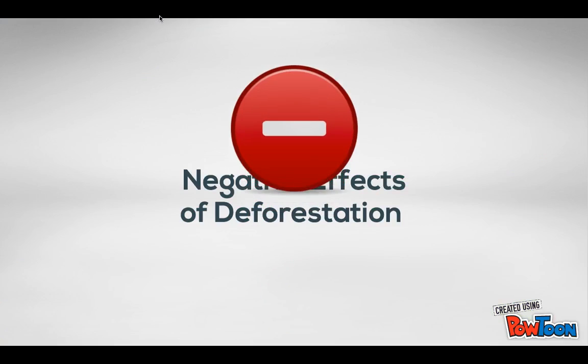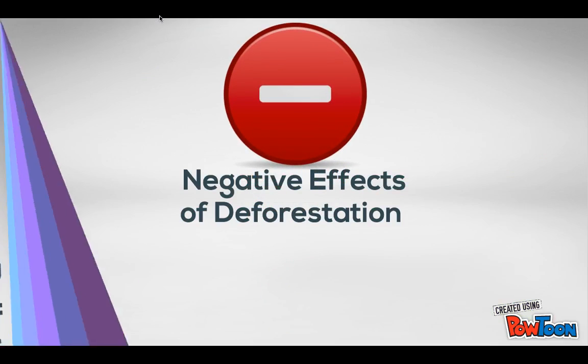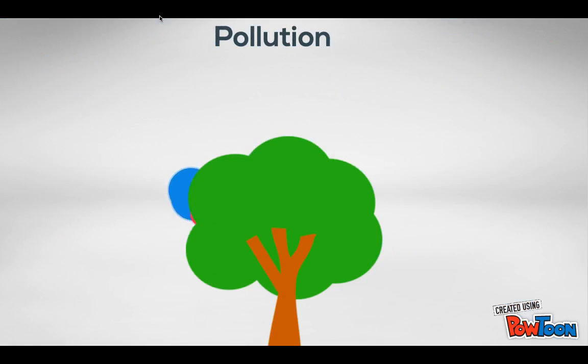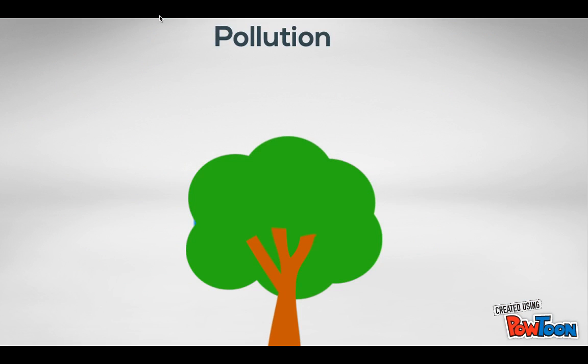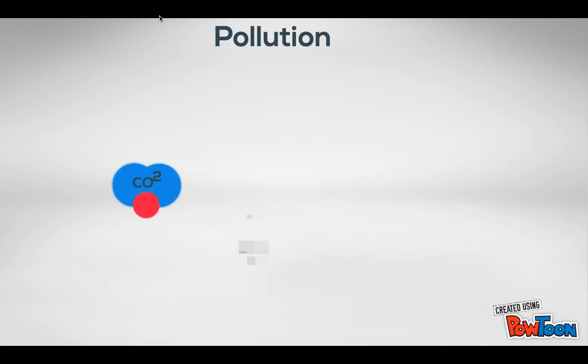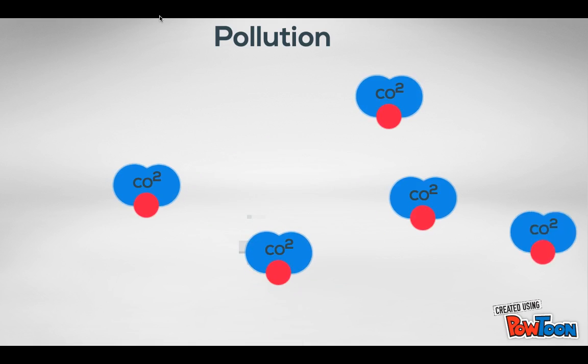There are two major negative effects of deforestation. The act of deforestation contributes to pollution. Trees absorb carbon dioxide and other pollutants. With fewer trees, these pollutants remain in the air and contribute to pollution. Trees also reduce pollution in water by reducing runoff and adding to buffer zones.